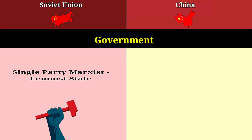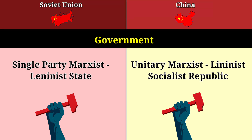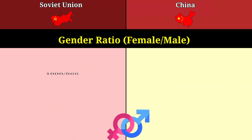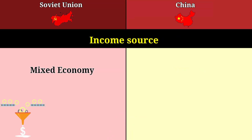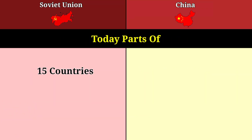Government: single-party Marxist-Leninist state for the Soviet Union, unitary Marxist-Leninist socialist republic for China. Gender ratio: 1000 per 866 for the Soviet Union, 1000 per 1046 for China. Income source: mixed economy for the Soviet Union, manufacturing revenue for China. Today the Soviet Union's territory comprises 15 countries, while China remains 1 country.